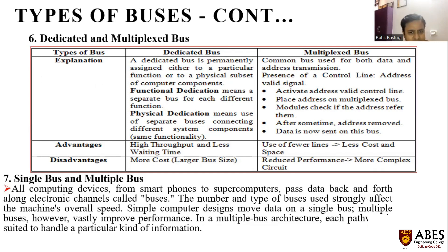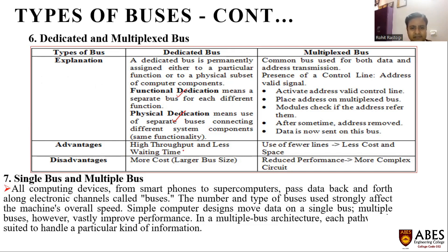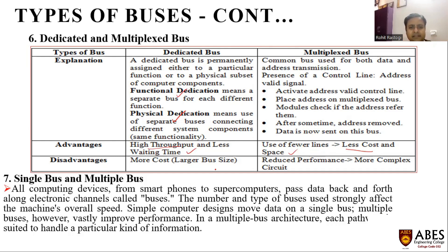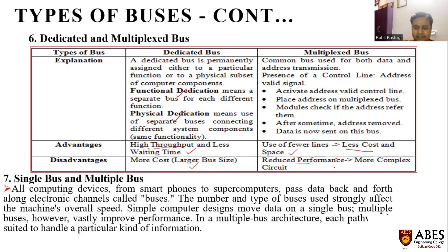A dedicated bus is particularly dedicated for a specific task — it may be for functional or physical dedication. A multiplex bus operates in shared mode, where the same bus is used to transfer both data lines and address data. The advantage of dedicated buses is high efficiency and less waiting time, while multiplex buses have fewer lines resulting in less cost and less space. The disadvantage of dedicated buses is higher cost, while multiplex buses have lower performance and more complex interconnection circuits.